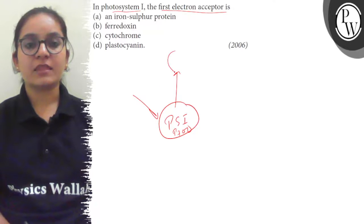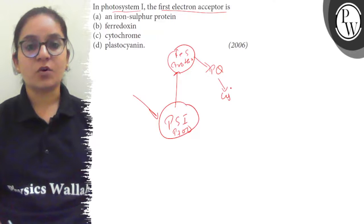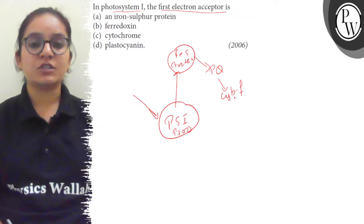it absorbs light and gets excited. The primary electron acceptor here is iron-sulfur protein. This iron-sulfur protein then passes the electron downhill to plastocyanin, and plastocyanin passes the electron to the cytochrome bf complex, where the energy